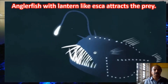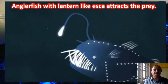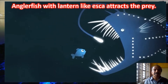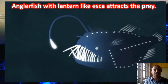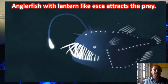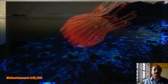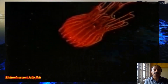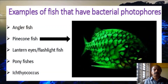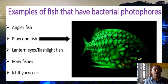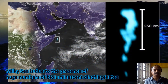Animals exhibit bioluminescence for several reasons: it may be predation, protection, defense, or even mating and courtship. Another example is the pine cone fish, which also exhibits bioluminescence — it possesses organs called photophores in which bioluminescence occurs.